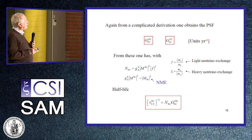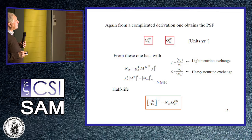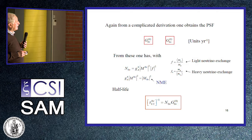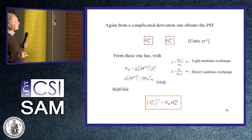One obtains two form factors from a standard but complicated derivation. From these, one can calculate the half-life, which involves the phase-space factors times the quantity n. This quantity n contains the axial vector coupling constant, the nuclear matrix elements, and the physics beyond the standard model. The two scenarios considered are light neutrino exchange — where the quantity f is proportional to the neutrino mass — or heavy neutrino exchange, where f is inversely proportional to the neutrino mass.